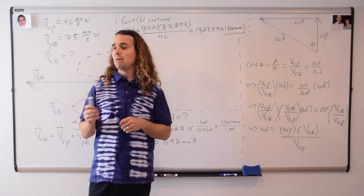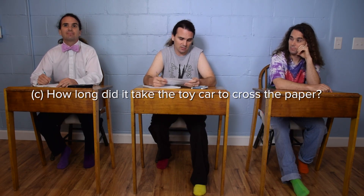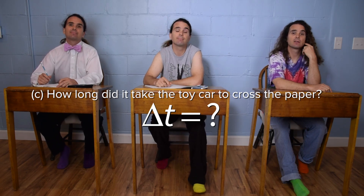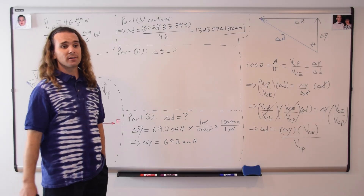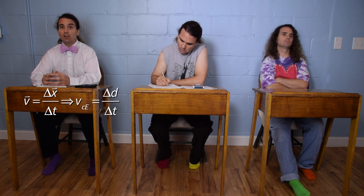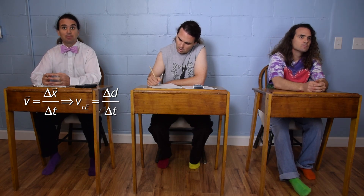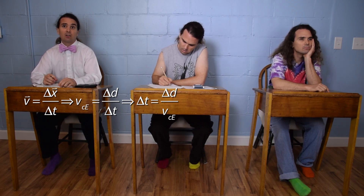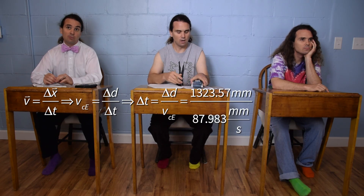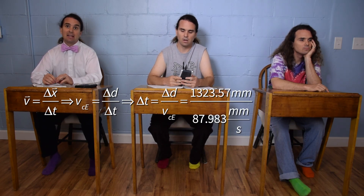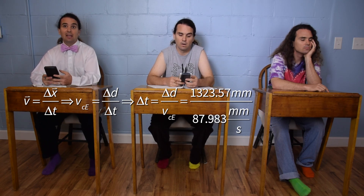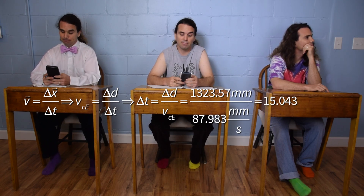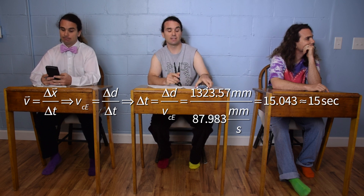And now part C. Bobby and Bo, please. Part C: how long did it take the toy car to cross the paper? Change in time equals question mark. Billy, it's your turn. We know the car is moving at a constant velocity, so: velocity equals displacement over change in time. The velocity of the car with respect to the earth equals the displacement along the hypotenuse divided by the change in time. Solving for the change in time: delta t equals 1,323.57 millimeters divided by 87.983 millimeters per second. The millimeters cancel out and we get 15.043 seconds, which rounds to 15 seconds with two sig figs.